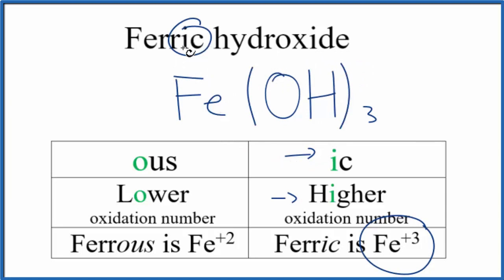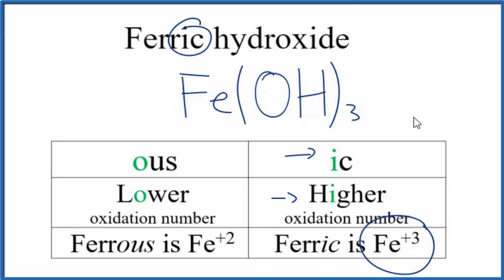That ends up giving us the formula for ferric hydroxide Fe(OH)3. Most often now you'll hear this called iron three hydroxide and the three is coming from this oxidation number of plus three on the iron.